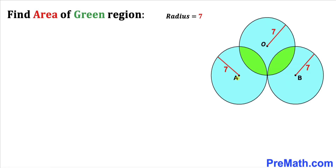Welcome to PreMath. In this video we have got three identical circles that intersect each other as you can see in this diagram, and as a result this green shaded region is conceived. The radius of each of these circles is seven units, and now we are going to calculate the area of this green shaded region.